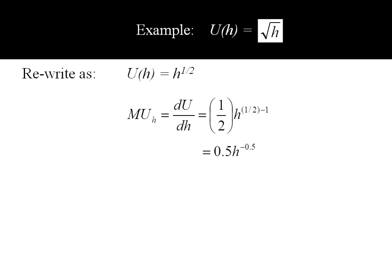I usually like to convert fractions into decimals. So out front I've got 0.5 times h to the negative 0.5.